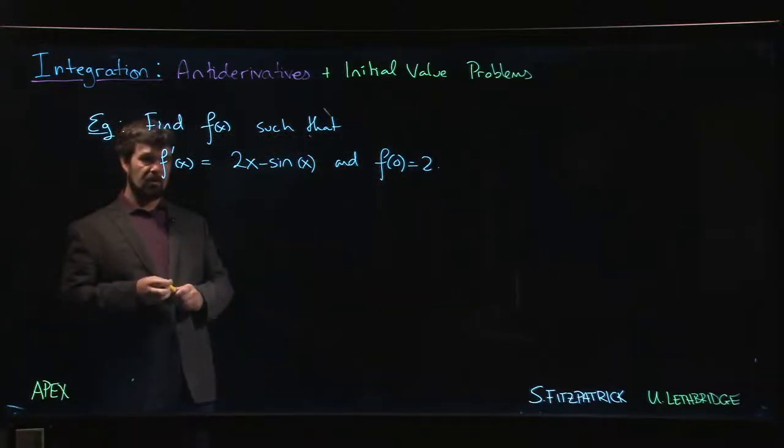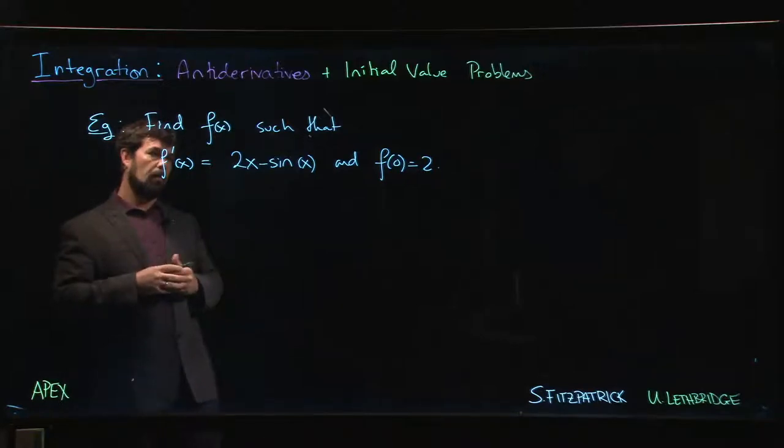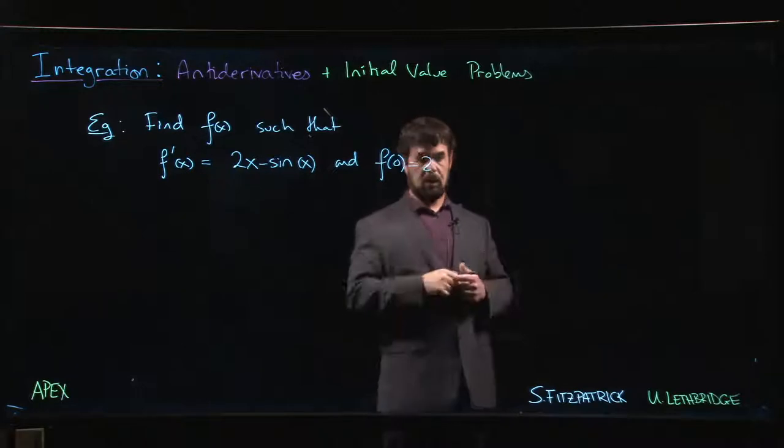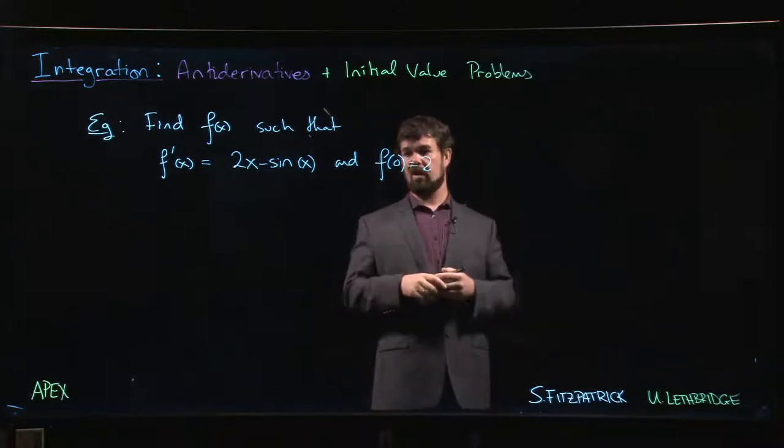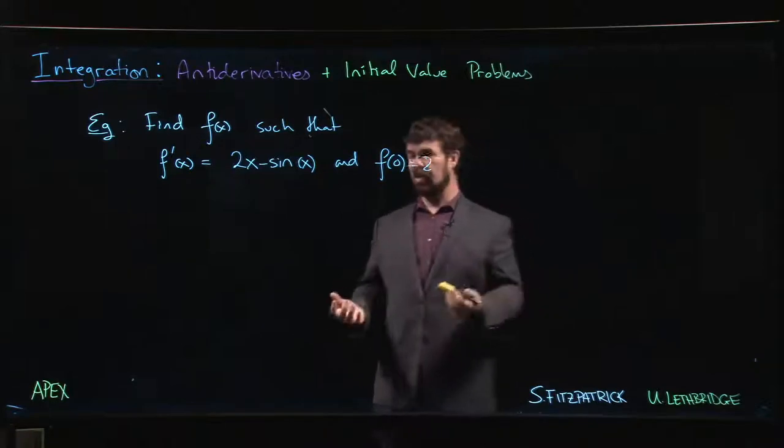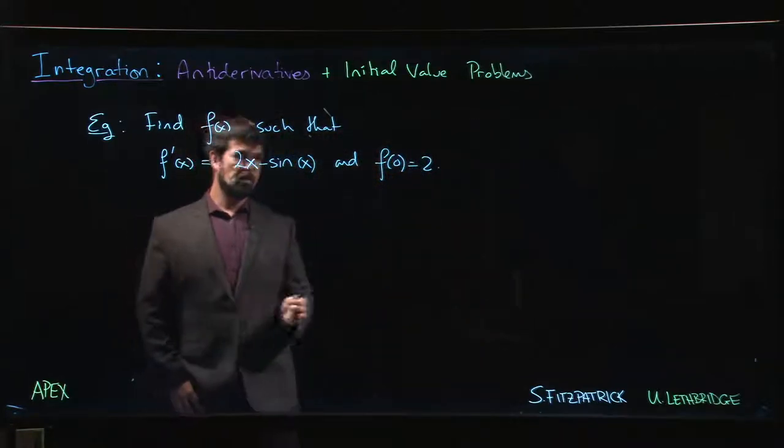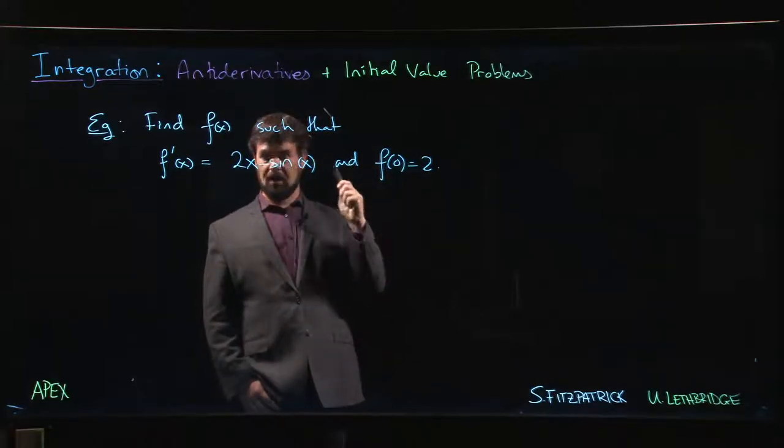physics and chemistry and biology, where you have information about how some quantity is changing—which means you have information about derivatives—and you might know the value of that function at some particular point. Often the independent variable will be t rather than x, because we're thinking about things that are changing with respect to time. This might be what's called the initial value—when time is zero, that's